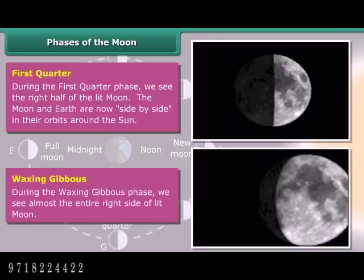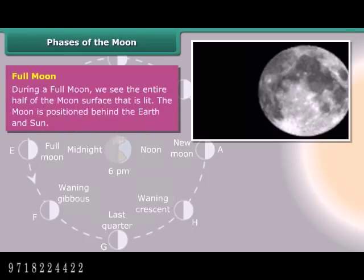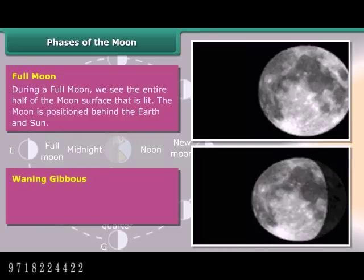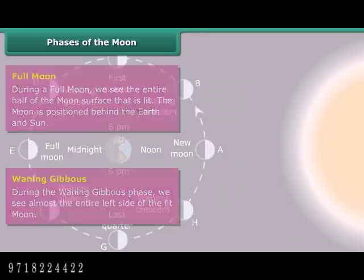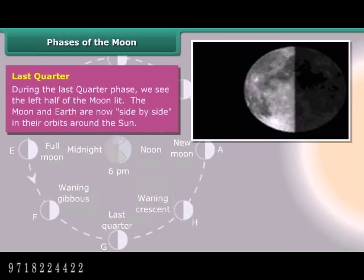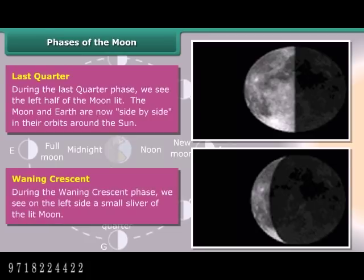During the Waxing Gibbous phase, we see almost the entire right side of the lit Moon. During a Full Moon, we see the entire half of the Moon's surface that is lit, with the Moon positioned behind the Earth relative to the Sun. During the Waning Gibbous phase, we see almost the entire left side of the lit Moon. During the Last Quarter phase, we see the left half of the Moon lit. During the Waning Crescent phase, we see a small sliver of the lit Moon on the left side.